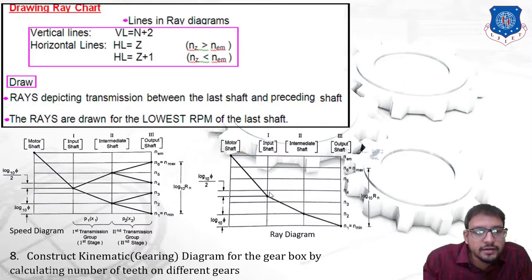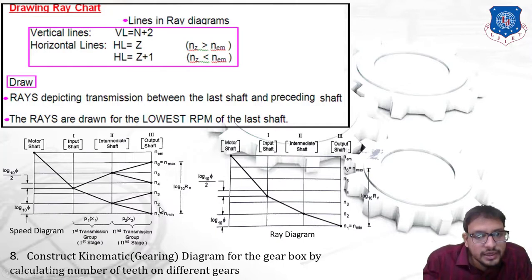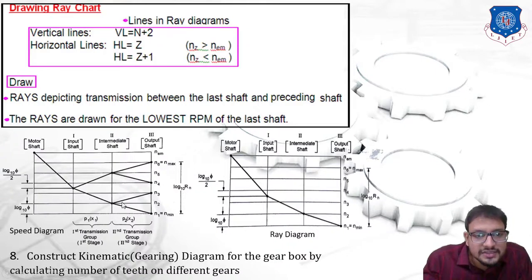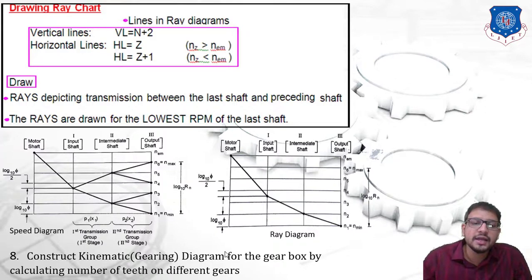From the speed diagram, we can derive the ray diagram. Since rays are drawn for the lowest RPM of the last shaft (output shaft), we take the line representing minimum RPM — n1 (n minimum). Starting from the motor shaft going to the input shaft point and directly to the output shaft at minimum RPM gives the ray diagram. The next step is to construct a kinematic gearing diagram by calculating the number of teeth on different gears.